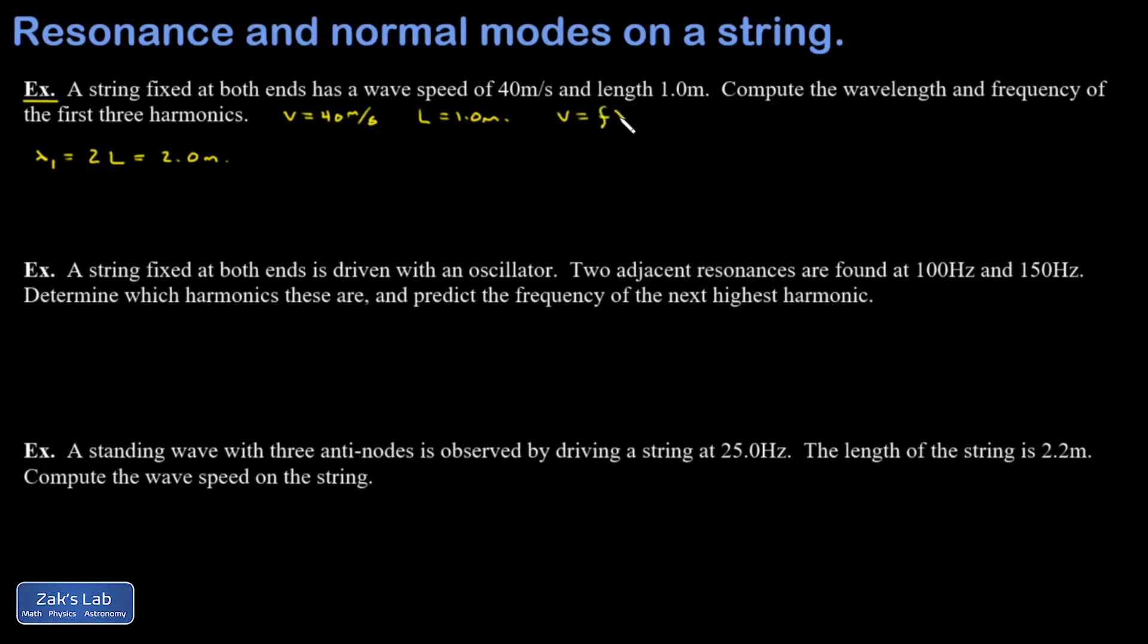v equals f lambda means that f is v over lambda. So I get the f one is equal to v over lambda one, that's 40 over two, and that's 20 hertz.